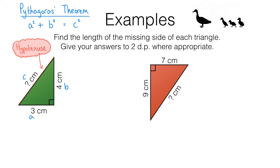I'm going to start by writing the theorem: A squared plus B squared equals C squared. I can now substitute the values from the diagram. I know that A is 3 and B is 4, so I can write 3 squared plus 4 squared equals C squared. Now 3 squared is 9, 4 squared is 16, and 9 plus 16 is 25. So 25 equals C squared.